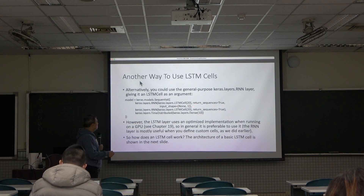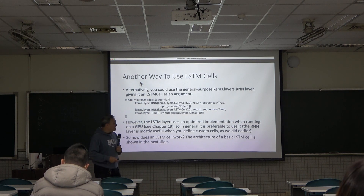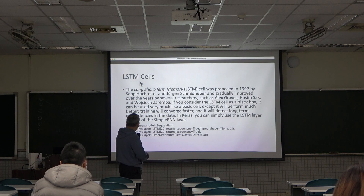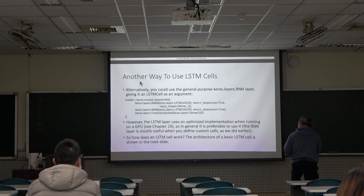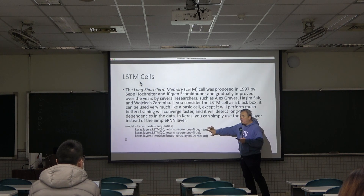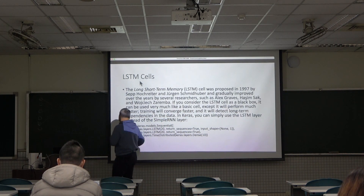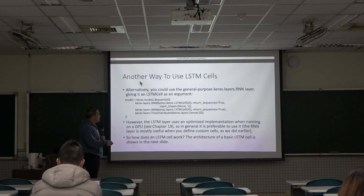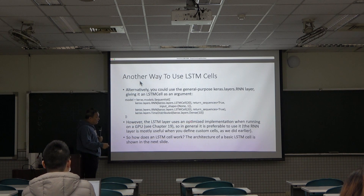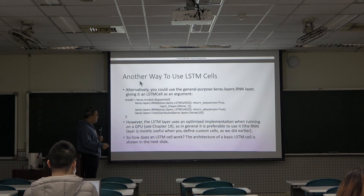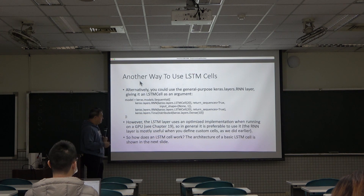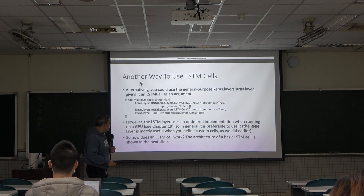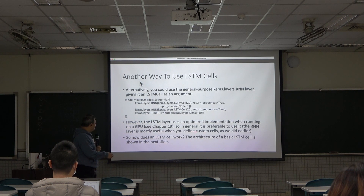Another way to use the LSTM cell is to use keras.layers.rnn, but inside the parentheses you specify that you want to use the LSTM cell and specify how many cells you want. The other part remains the same. If you ask me which version is better, I will tell you to use the direct keras.layers.lstm version, because the LSTM layer has been optimized for GPU or CPU. In general, it is preferred to use that one in terms of speed.